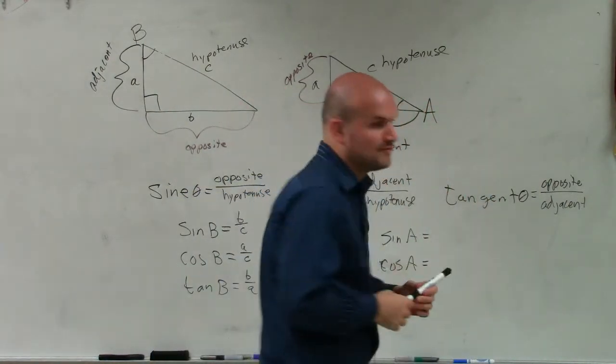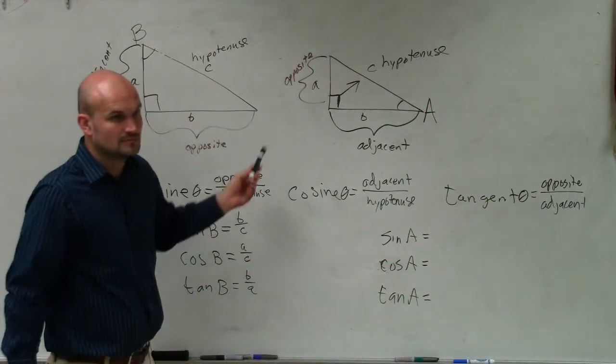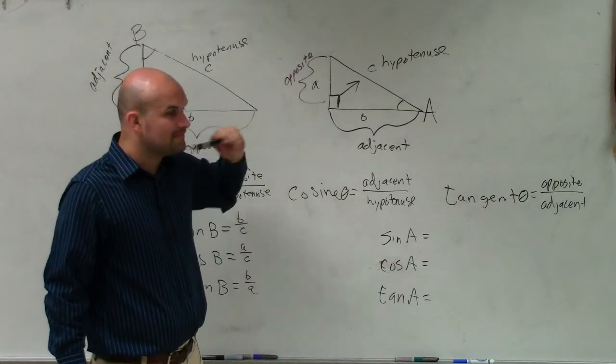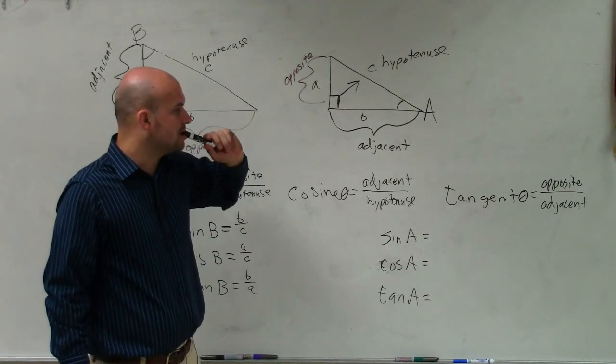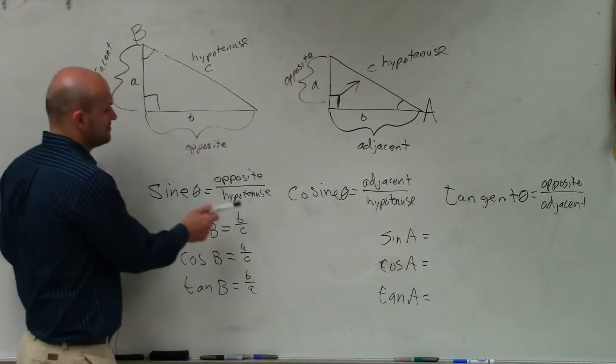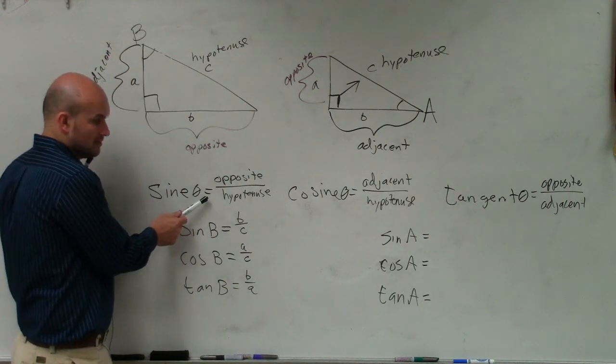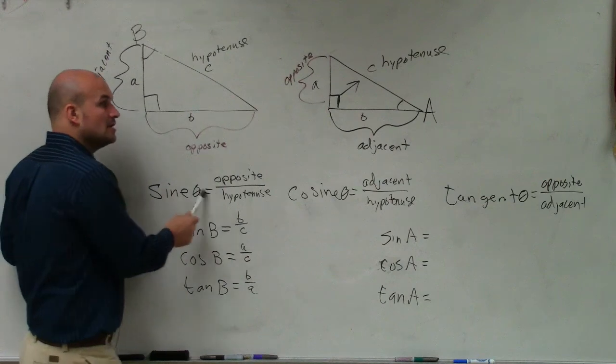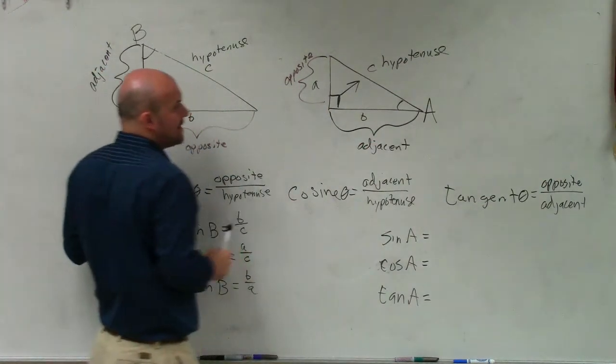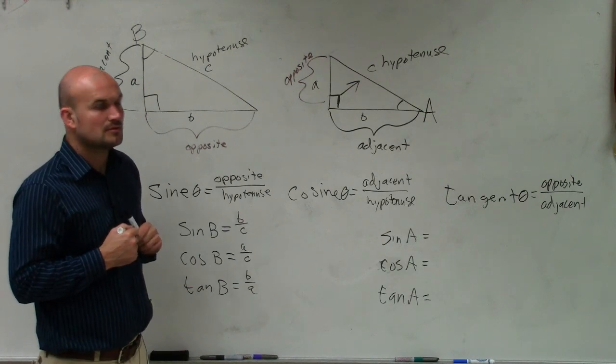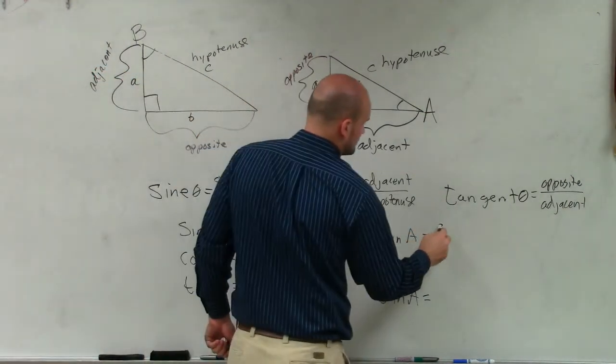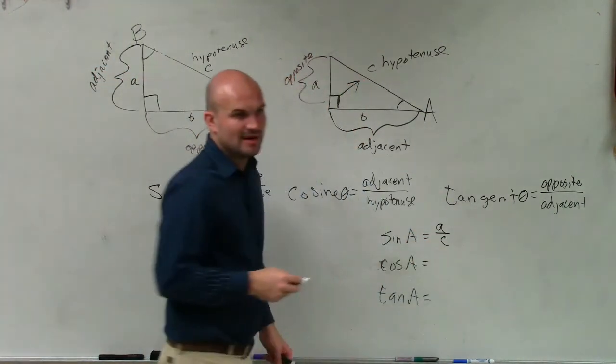OK. Anybody got an answer? Tyler, you want to give me an answer for sine of A? Sine of A represents what? The ratio of what? I don't know about sine. Well, what is the ratio of sine? Opposite over hypotenuse, right? So let's go over to angle A. What is the opposite side? A. What is the hypotenuse? C. That wasn't so bad, was it?